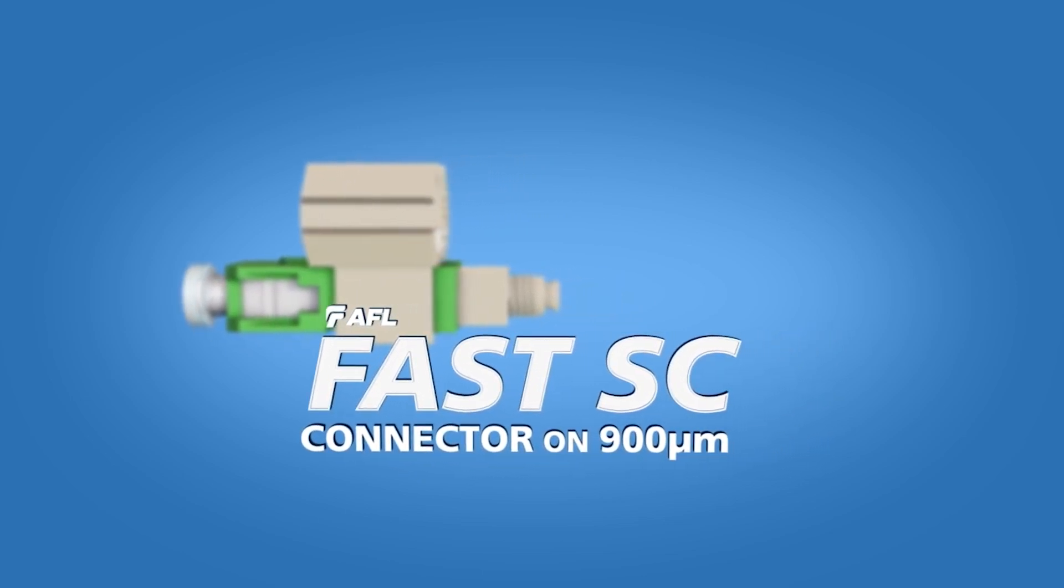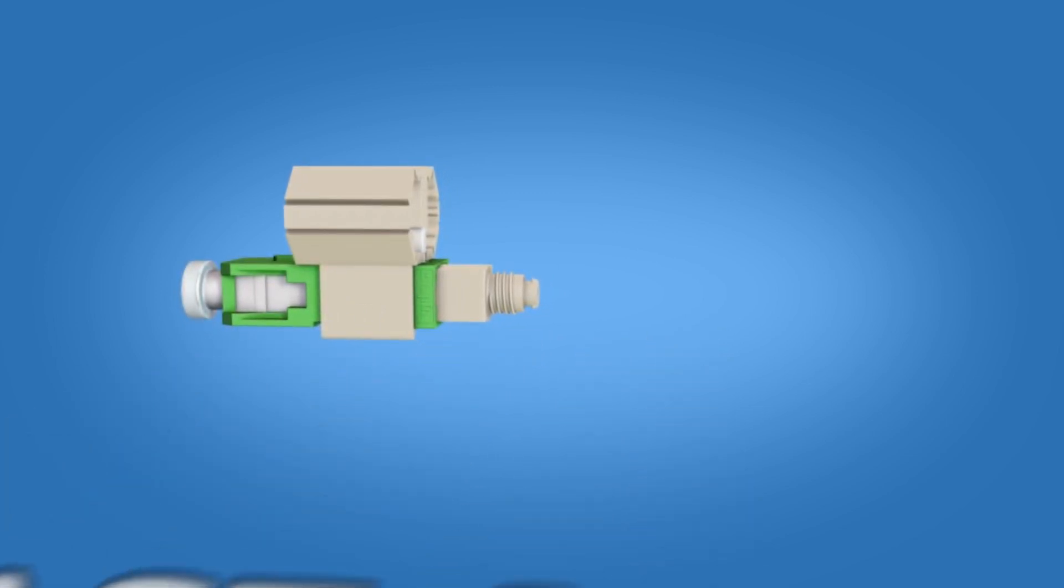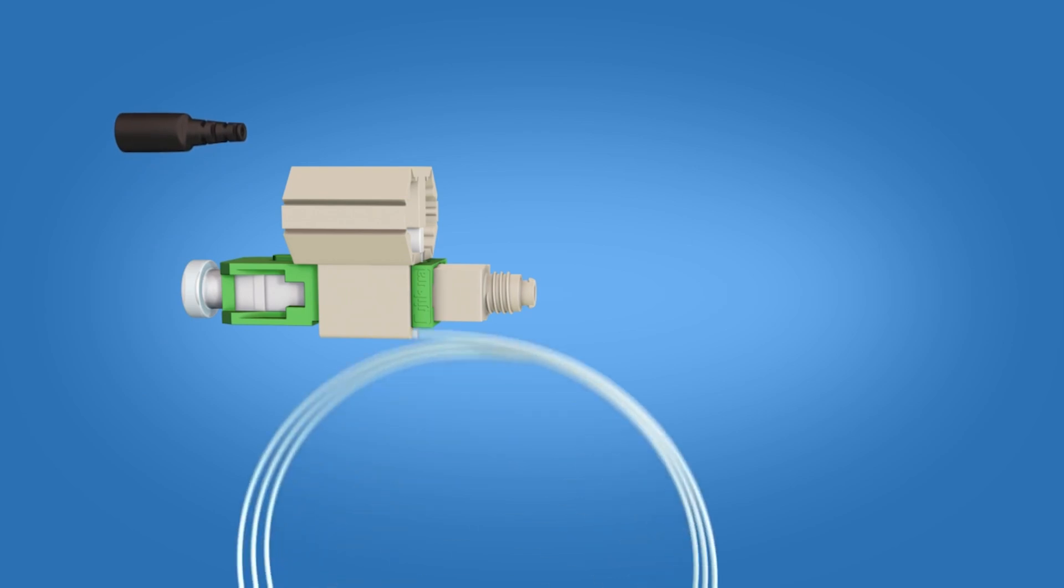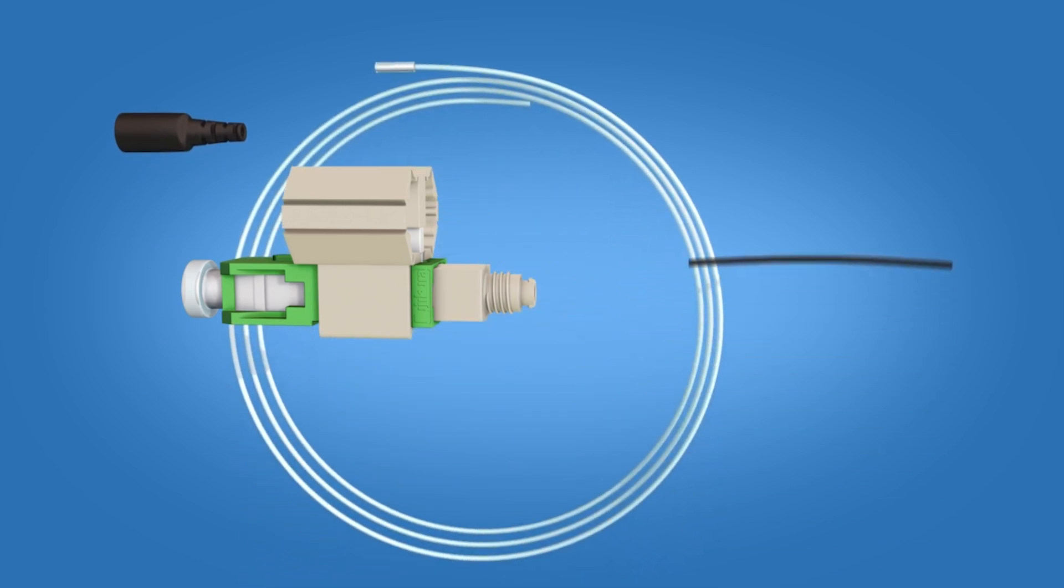The FastSC Connector Kit contains the following items: a 900-micron boot, clear protective tubing, 250-micron tubing, and a FastSC Connector.